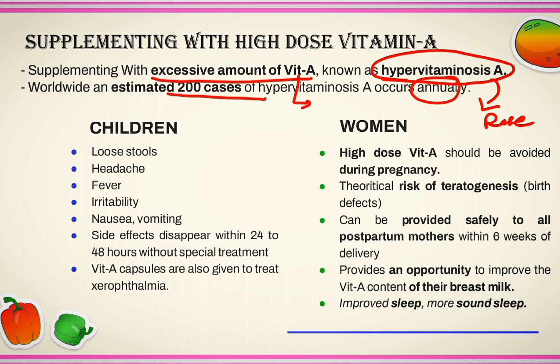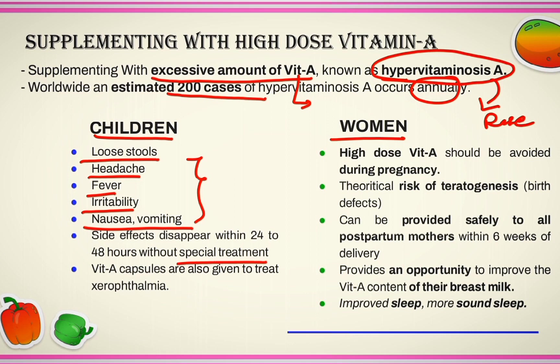Hypervitaminosis A is manifested differently in children and women. In children it can manifest as loose stools, headache, fever, irritability, nausea, and vomiting. However, all these side effects can resolve on their own without any specific treatment within 24 to 48 hours.